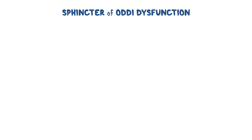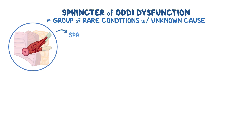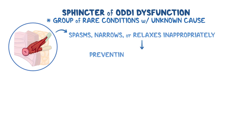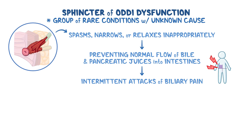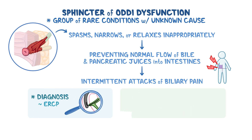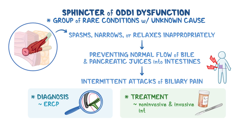As a quick recap: Sphincter of Oddi dysfunction is a group of rare conditions with an unknown cause that occur when the sphincter of Oddi spasms, narrows, or relaxes inappropriately, preventing the normal flow of bile and pancreatic juices into the intestines. Signs and symptoms include intermittent attacks of biliary pain, typically located in the upper right quadrant, that can be mild to severe, last more than 30 minutes, and can resolve spontaneously. Diagnosis is typically made through ERCP, and treatment can include non-invasive and invasive interventions.